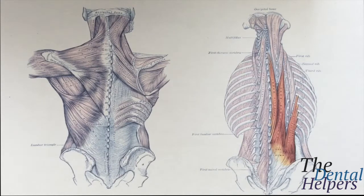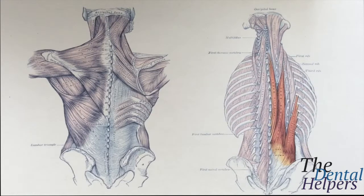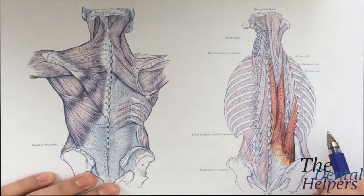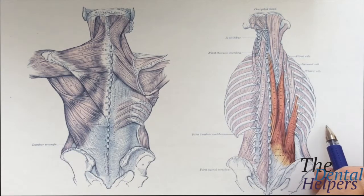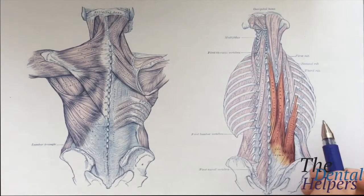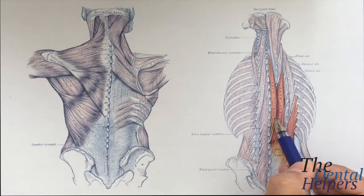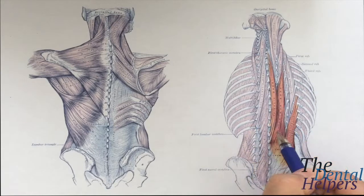We're first going to start with the erector spinae muscles and the multifidus — the two main deep back muscles you have to know. The erector spinae include the spinalis, the longissimus, and the iliocostalis. This image highlights these three muscle groups. The spinalis is going to be closer to the spine, so it's the more medial one.